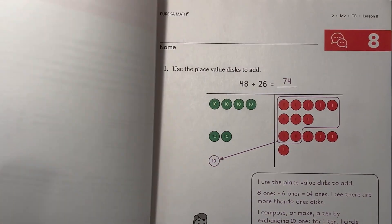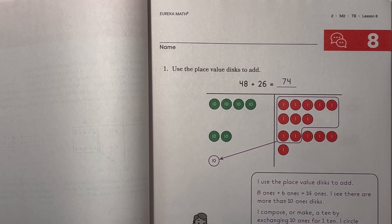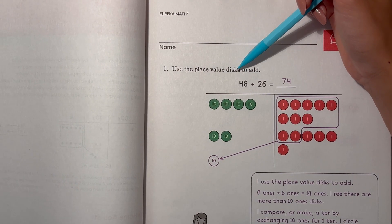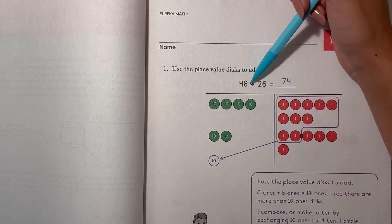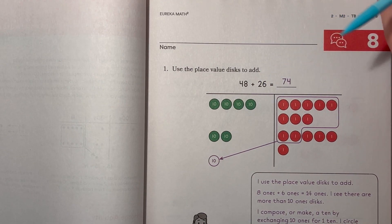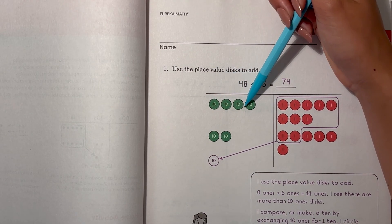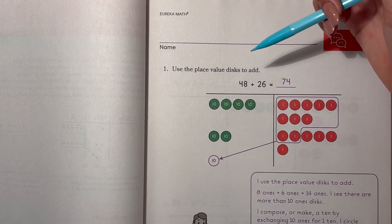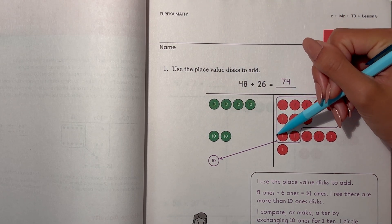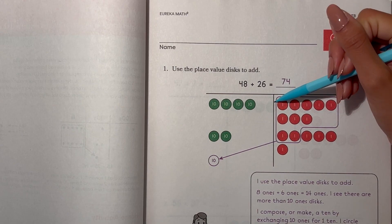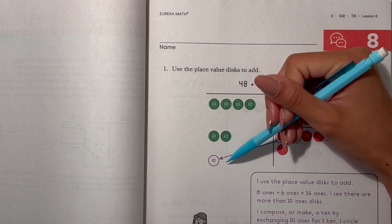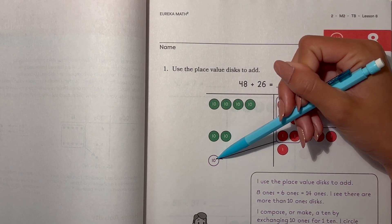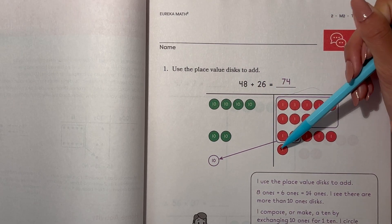Alright, this is Lesson 8, the Explanation Part. Number 1, use the place value disks to add. We have 48 plus 26. So what they did here, they regrouped. 10 ones is equal to 1 ten. So they moved that over to 10. So now we have 7 tens and 4 ones, which is 74.